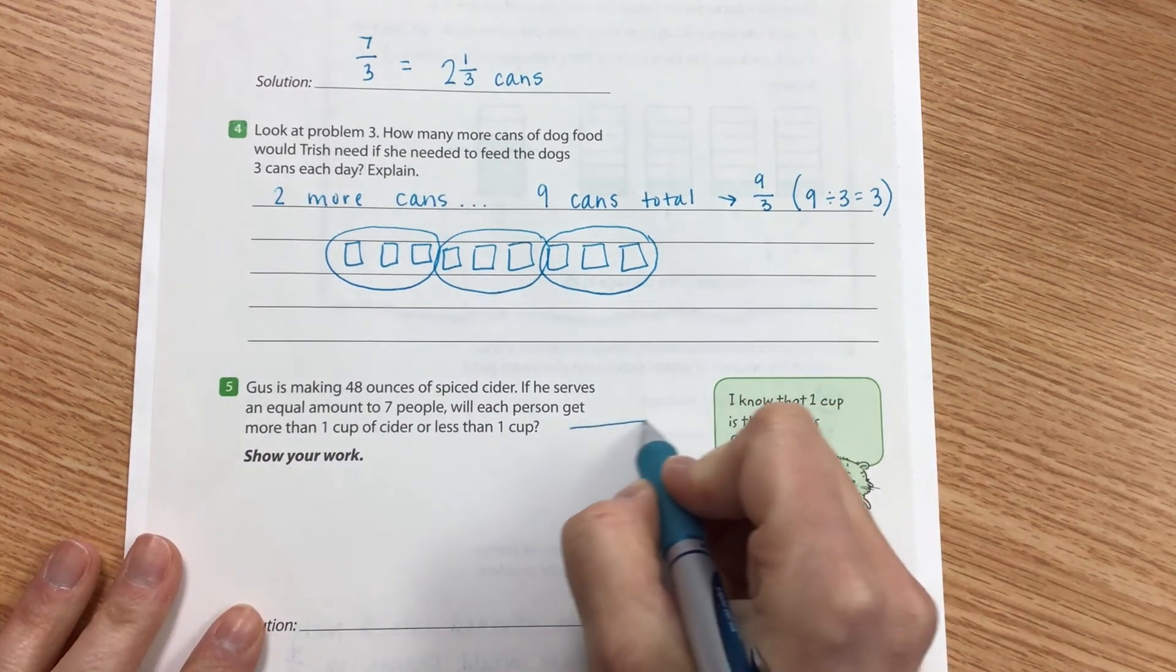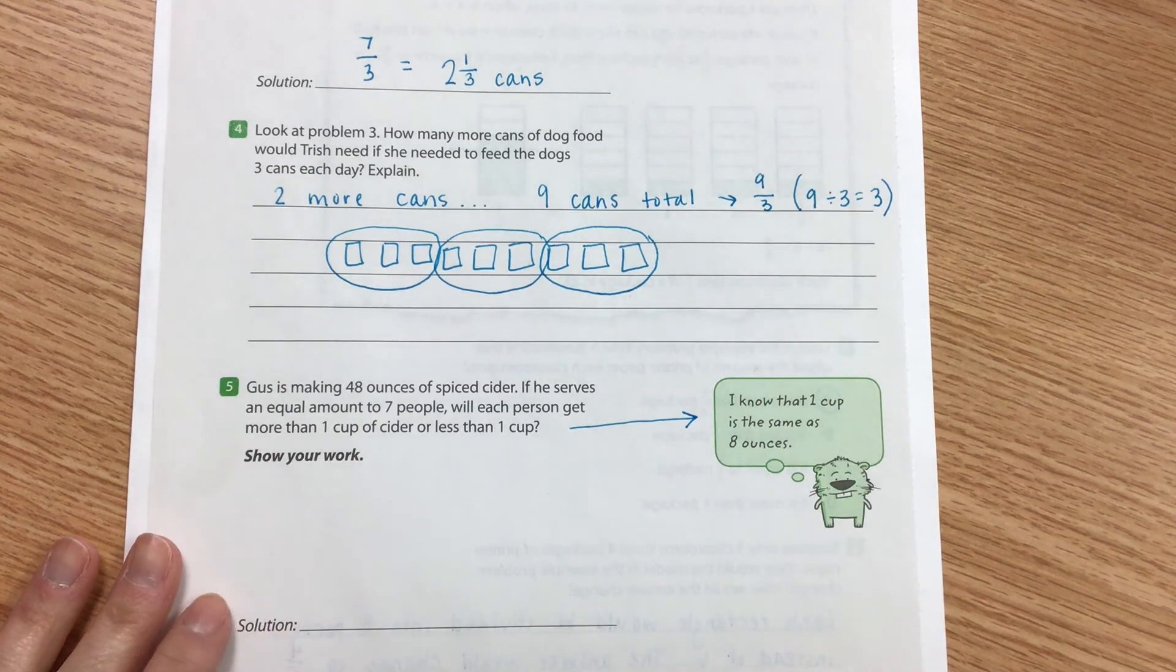And I want us to focus over here on our helpful hint that says, I know that one cup is the same as eight ounces, because that's going to help us out in a minute.